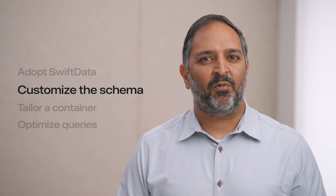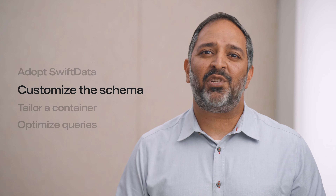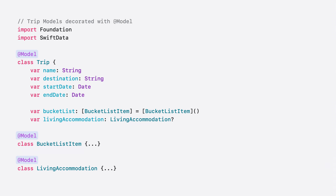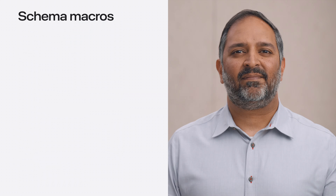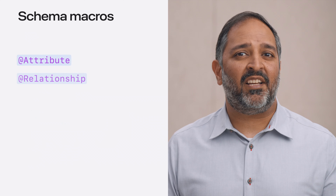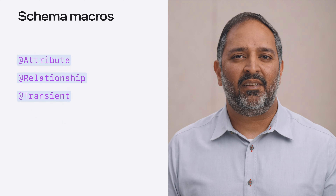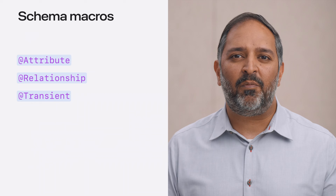The first step was adding the model macro, and that was just the beginning of how to customize the schema. The model macro is powerful and jumpstarts the persistence experience. By simply decorating all of my persistable classes with the macro, the trip class and related models will have their stored properties persisted. And you can go even further to customize the schema with the macros for attributes and relationships, and the ability to mark a stored property as transient to avoid persisting that data.